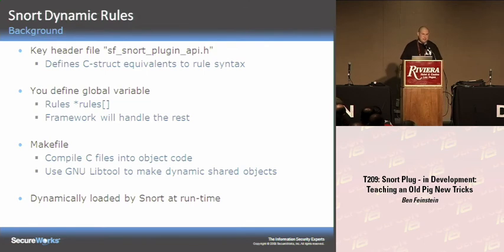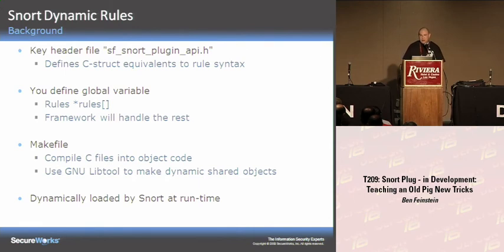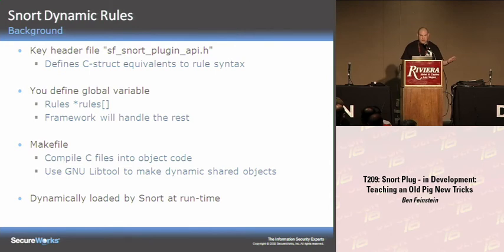Dynamic rules are probably the simplest way to extend Snort using C. There's one key header file to look at: the sf-snort-plugin-api header. It defines C structure equivalents to all the rule syntax structures — flow, content, PCRE, and so on. In C code you create a struct with the same properties as the rules language. Inside your dynamic rule file you have an array of pointers to rules. The framework handles the rest — you point Snort to your shared object and it loads them into the engine using libtool at runtime.